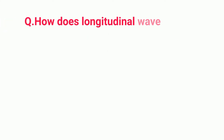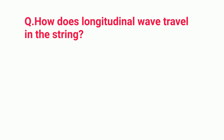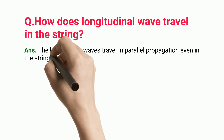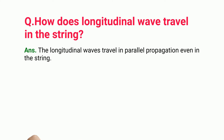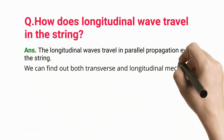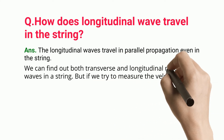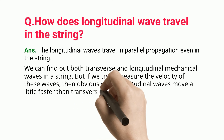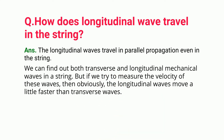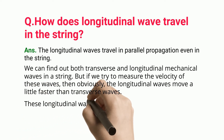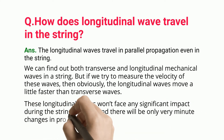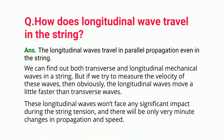How does a longitudinal wave travel in a string? The longitudinal waves travel in parallel propagation even in a string. We can find both transverse and longitudinal mechanical waves in a string, but if we measure the velocity of these waves, the longitudinal waves move a little faster than transverse waves. These longitudinal waves do not face any significant impact during string tension, and there will be only very minute changes in propagation and speed.